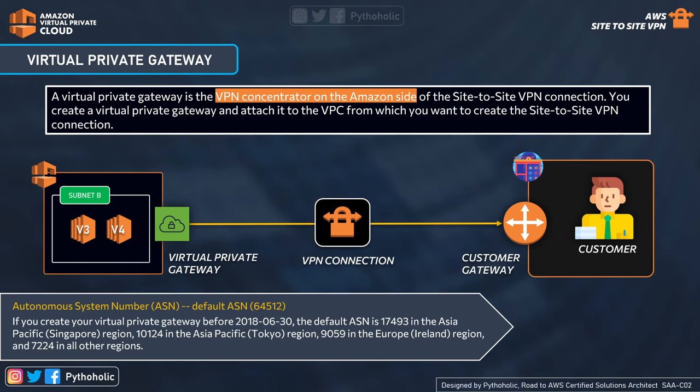For high availability, two tunnels provide the encrypted channel through which data passes from the customer network to and from AWS. This overhead, along with the lack of scalability, is one of the issues solved by transit gateways.